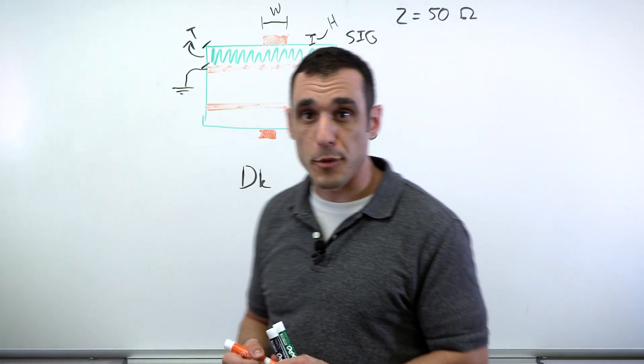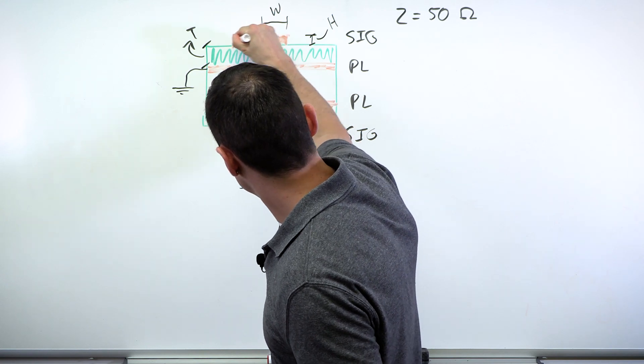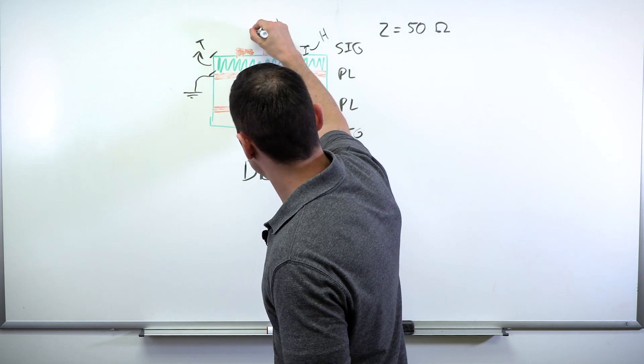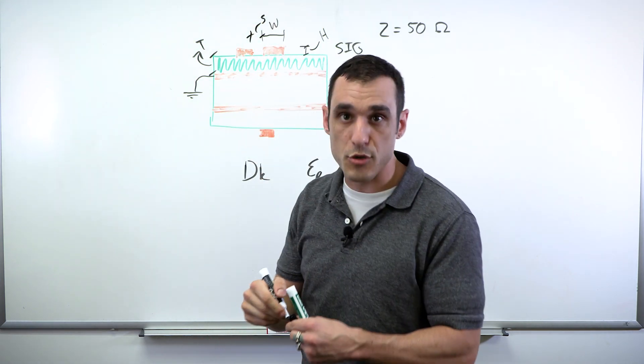Now this nicely extends out to differential pairs too, right? If we have differential pairs, I've got the corresponding trace up here on my top layer, and I've also got some spacing S defined between these two. So I've got two parameters that I've got to figure out, and you'll need a field solver for this.